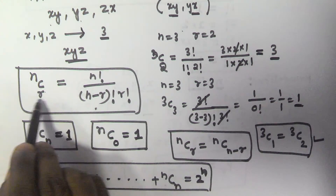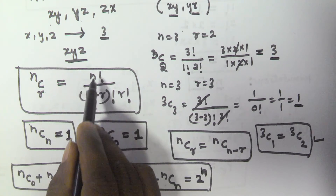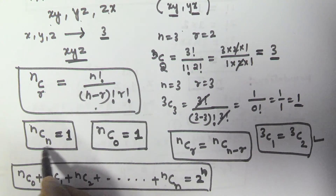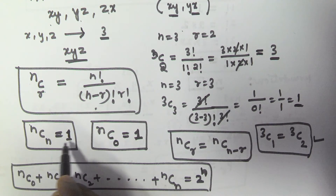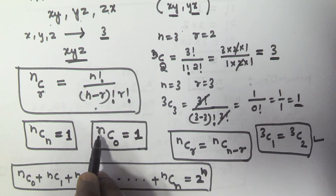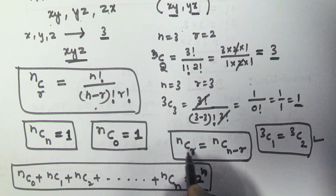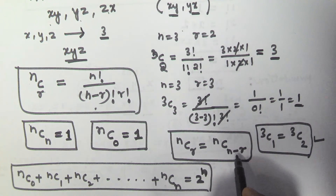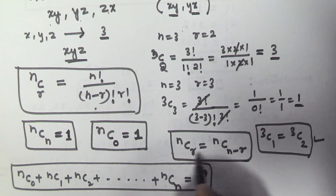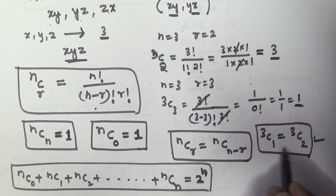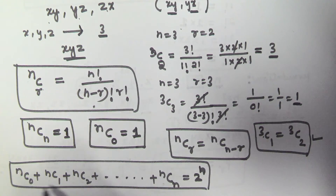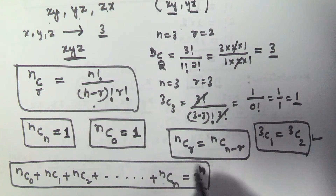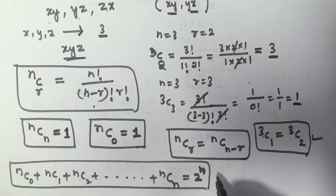To summarize: selecting r items out of n items equals n factorial divided by (n minus r) factorial into r factorial. When selecting n items out of n the answer is 1; when selecting 0 out of n the answer is also 1. nCr equals nC(n minus r), and nC0 plus nC1 plus nC2 and so on up to nCn equals 2 to the power of n. Thank you very much for watching this video, please subscribe to my channel.